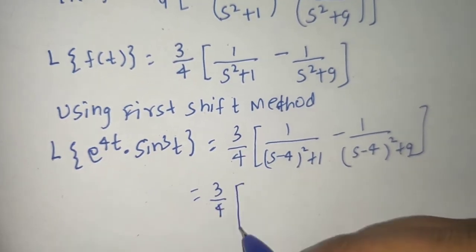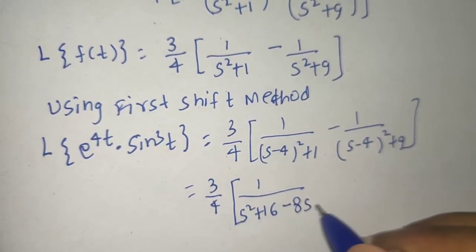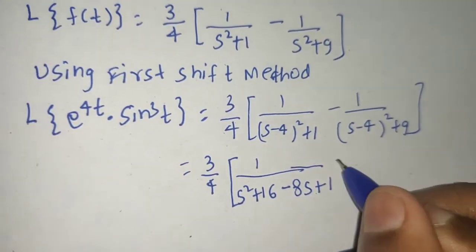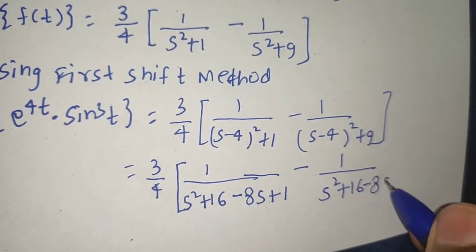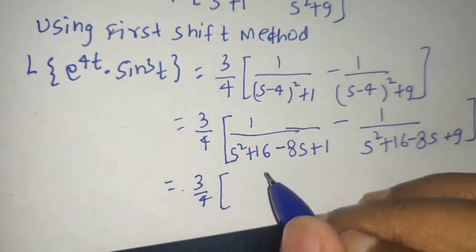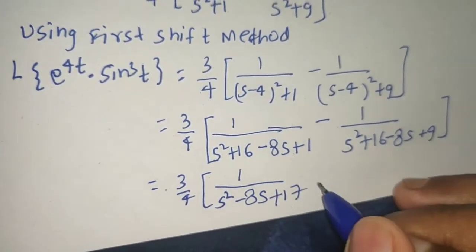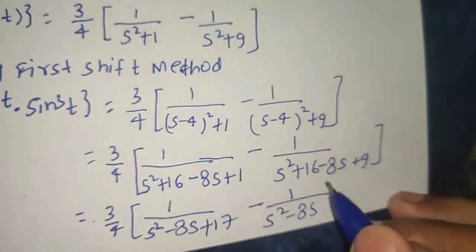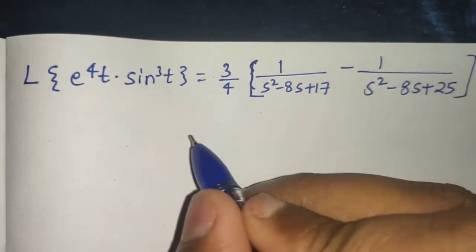Expanding (s−4)² = s² − 8s + 16. So (s−4)² + 1 = s² − 8s + 17, and (s−4)² + 9 = s² − 8s + 25. This gives (3/4) · [1/(s² − 8s + 17) − 1/(s² − 8s + 25)].